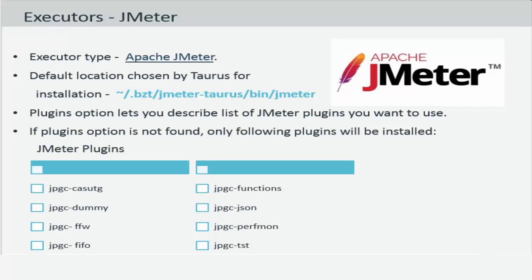By default, Taurus looks for JMeter inside the BZT JMeter Taurus bin JMeter folder and if it cannot find it here, it will download and install JMeter and run your script. You can though change this default location of the JMeter path.